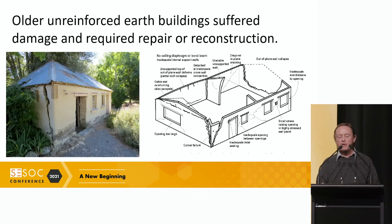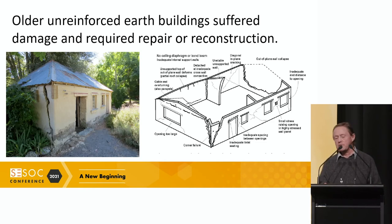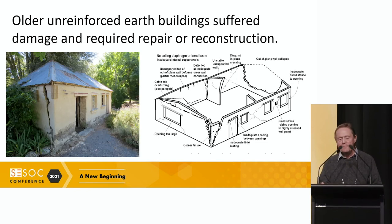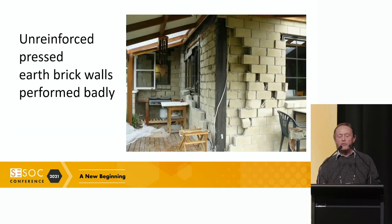However, older unreinforced earth buildings suffered damage and required repair or reconstruction. The diagram on the right shows the typical modes of failure we saw when inspecting older Cob and unreinforced buildings. Gable walls were particularly vulnerable to damage or even collapse. Corners were also vulnerable, as were openings. On the left-hand side we have an old Cob building where you can see the damage to the corner of the wall, now being held together with number 8 wire. Unreinforced pressed earth brick walls performed badly — pull out of the ties, many bricks on the ground.